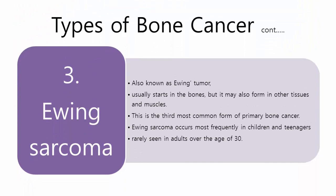Ewing sarcoma, also known as Ewing tumor, usually starts in the bones but may also form in other tissues and muscles. This is the third most common form of primary bone cancer. Ewing sarcoma occurs most frequently in children and teenagers, and is rarely seen in adults over the age of 30.